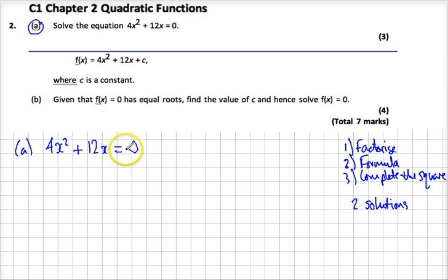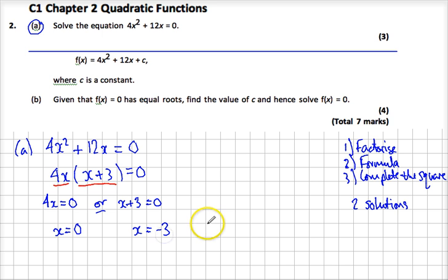We can tell it is quadratic because the highest power is 2, so we are looking for up to two real answers. Let's try and factorize it. This bit is even easier because it has got a common factor of 4x, which makes our life much easier. Then we know that 4x = 0 or x + 3 = 0. So the only way to solve this is x = 0, or x = -3.